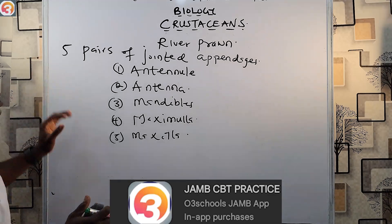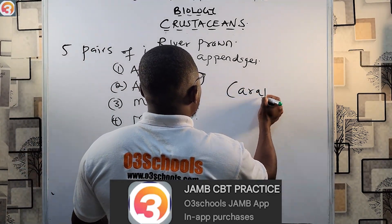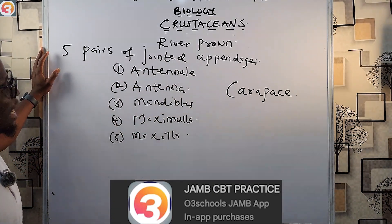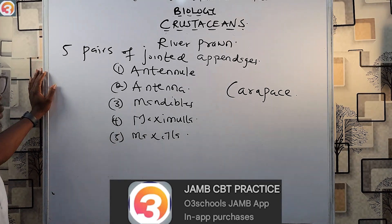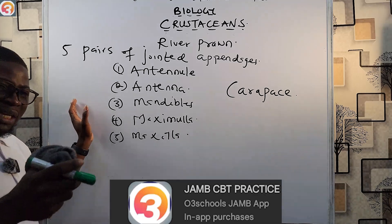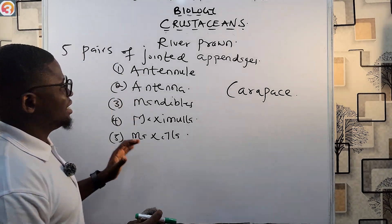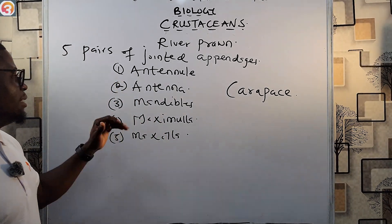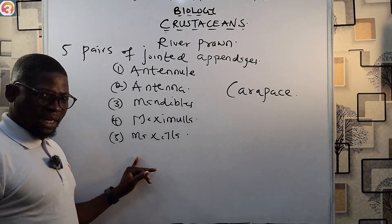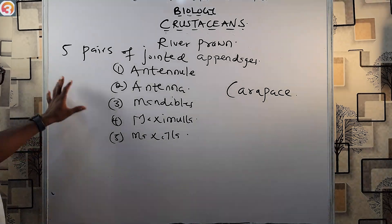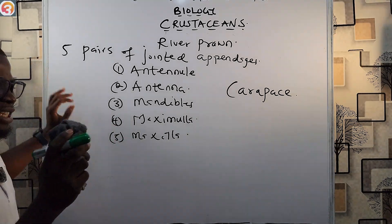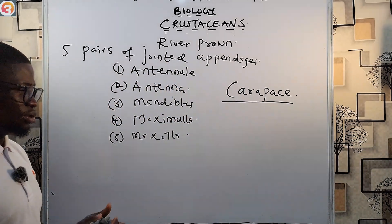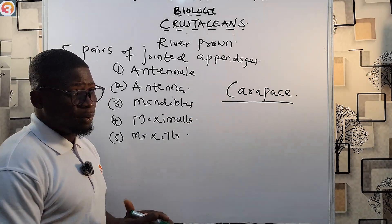The cephalothorax is covered by a hard covering known as the carapace. So the structure of the river prawn has a cephalothorax — the head and thorax fused together — five pairs of jointed appendages including the antennule, antenna, mandibles, maxillula, and maxilla, and the cephalothorax is covered by the carapace. I'm going to show you a diagram of the river prawn.